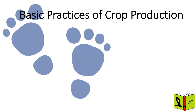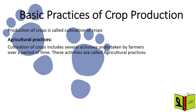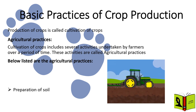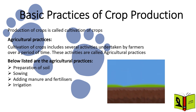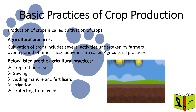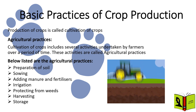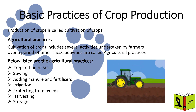Basic Practices of Crop Production. Production of crops is called the cultivation of crops. Basic practices of crop production are also known as Agricultural Practices. The cultivation of crops includes several activities undertaken by farmers over a period of time. These activities are called Agricultural Practices. The practices listed are: preparation of soil, sowing, adding manure and fertilizers, irrigation, protection from weeds, harvesting, and storage. Let's learn about all these agricultural practices one by one.